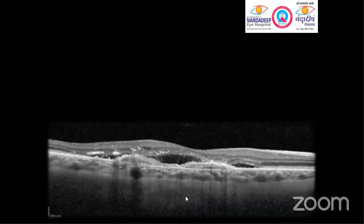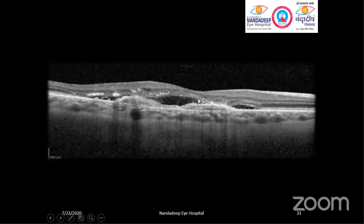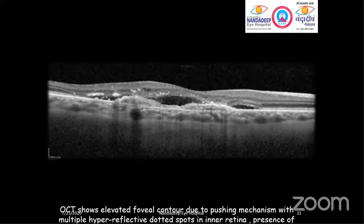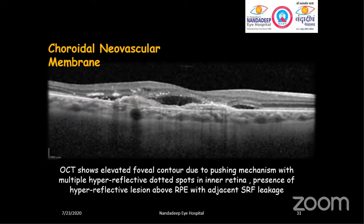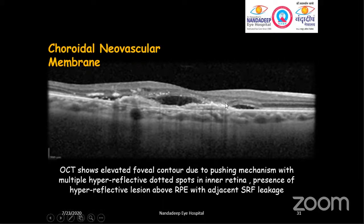Here we see that the foveal contour appears normal, and even the inner retina looks grossly normal. But there are formations of lesions at the outer retina area with adjacent SRF leakage — you can see the leakage at multiple points. There is a lesion formation above the RPE with adjacent SRF leakage. In patients with choroidal neovascular membrane (CNVM), you may find this kind of image — whether it is a form of wet ARMD. In different ARMD types — type 1 CNVM, type 2 CNVM, occult CNVM, classic CNVM — you may find these kinds of images. In patients with classic CNVM, we see this kind of image where there is a lesion above the outer retinal level with adjacent SRF leakage.